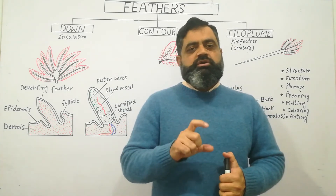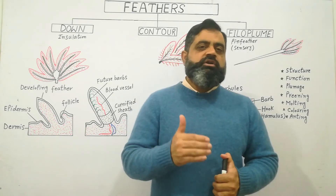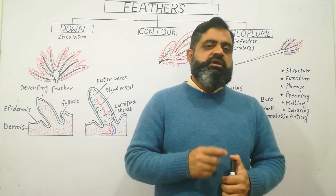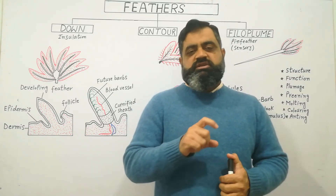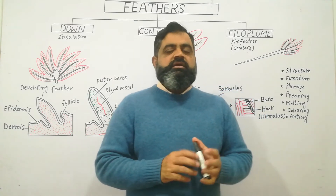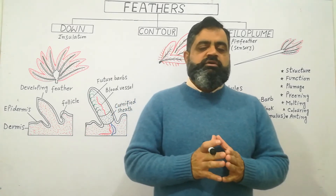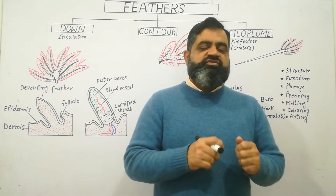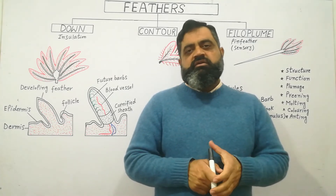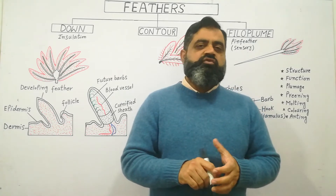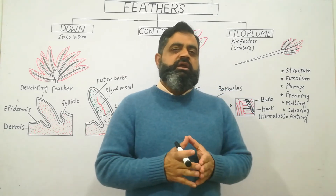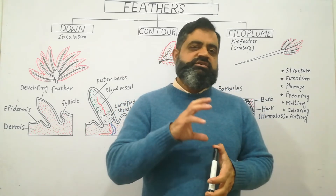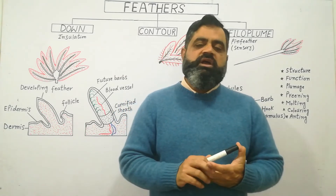Contour feathers can be narrower, wider, shorter, or smaller, and they are located on different parts of the body — the head region, wings, and tail. They are used for flying, steering, insulating, and for mating and courtship. They have different functions in the life history of birds.